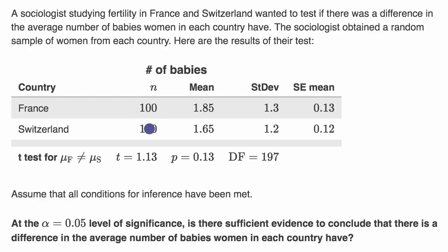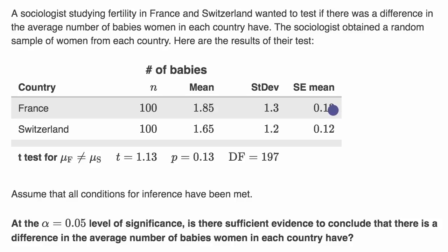They actually don't have to be the same sample size. We have our sample means and our sample standard deviations. You have the standard error of the mean, which for each sample would be our estimate of the standard deviation of the sampling distribution of the sample mean.